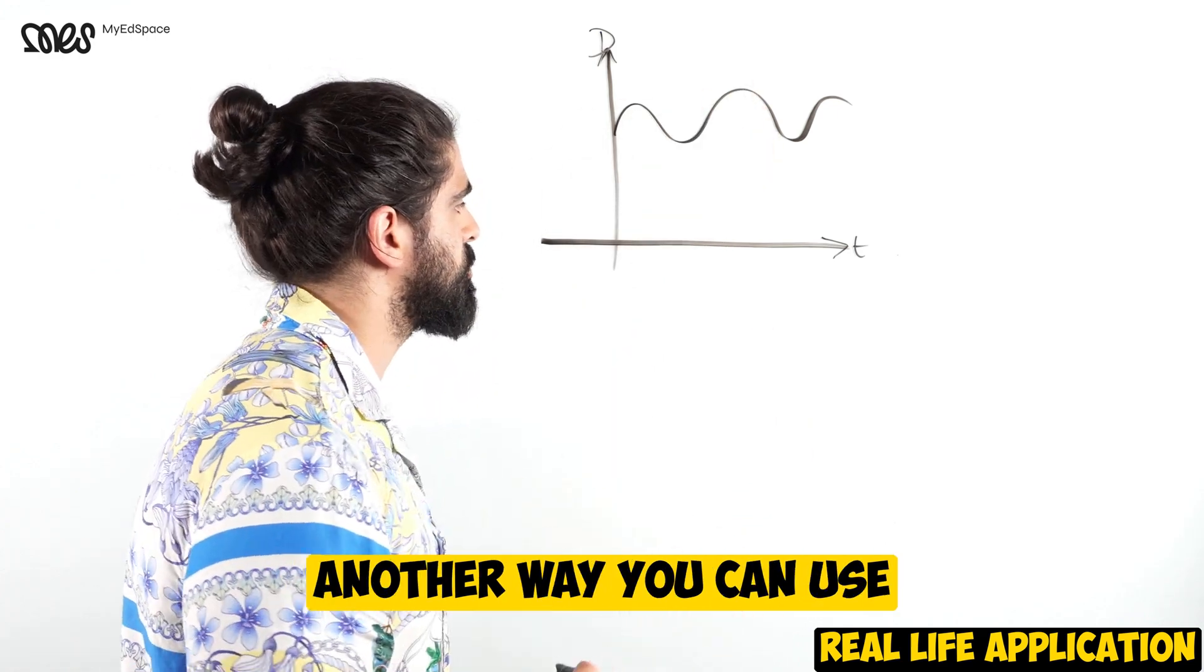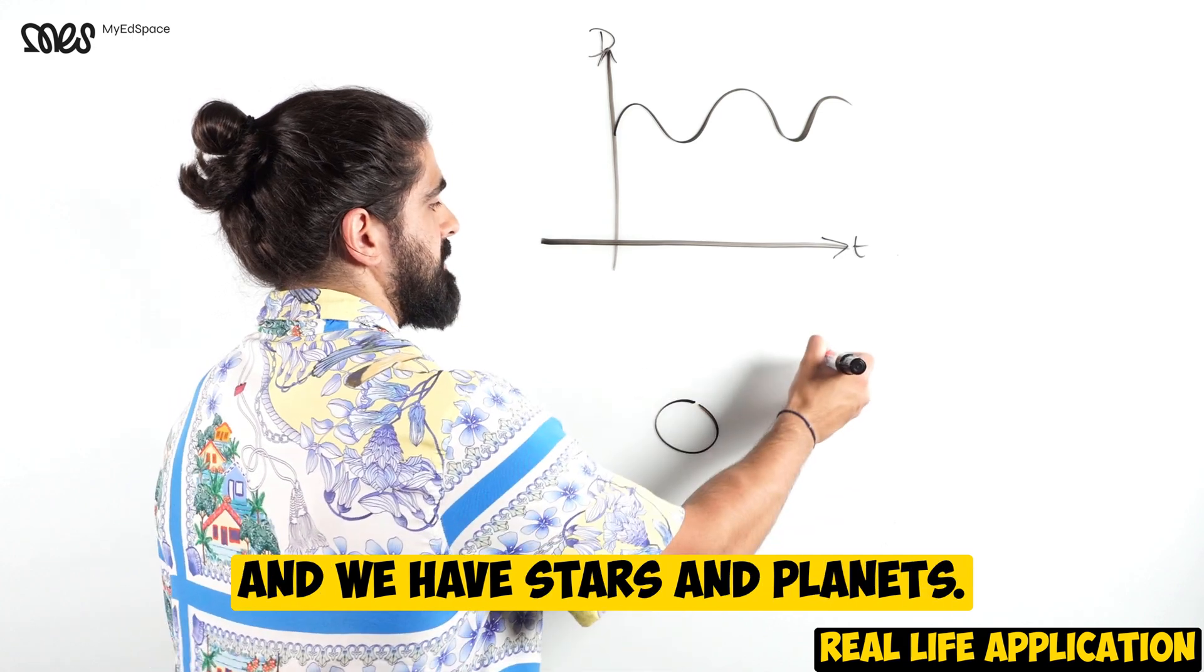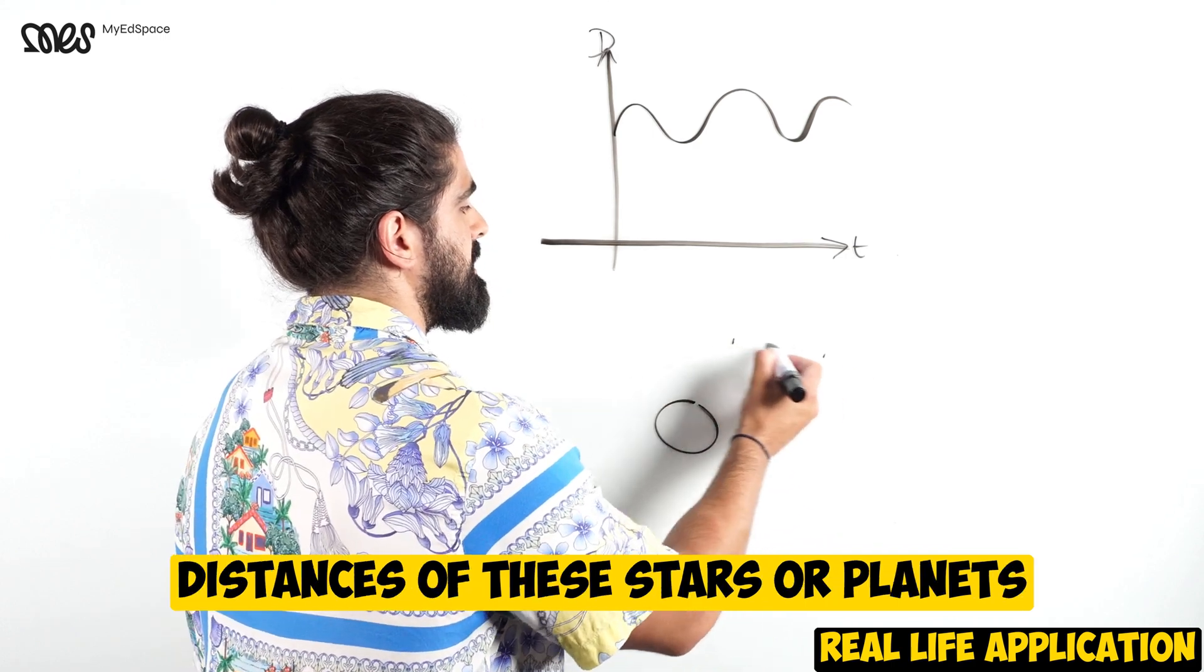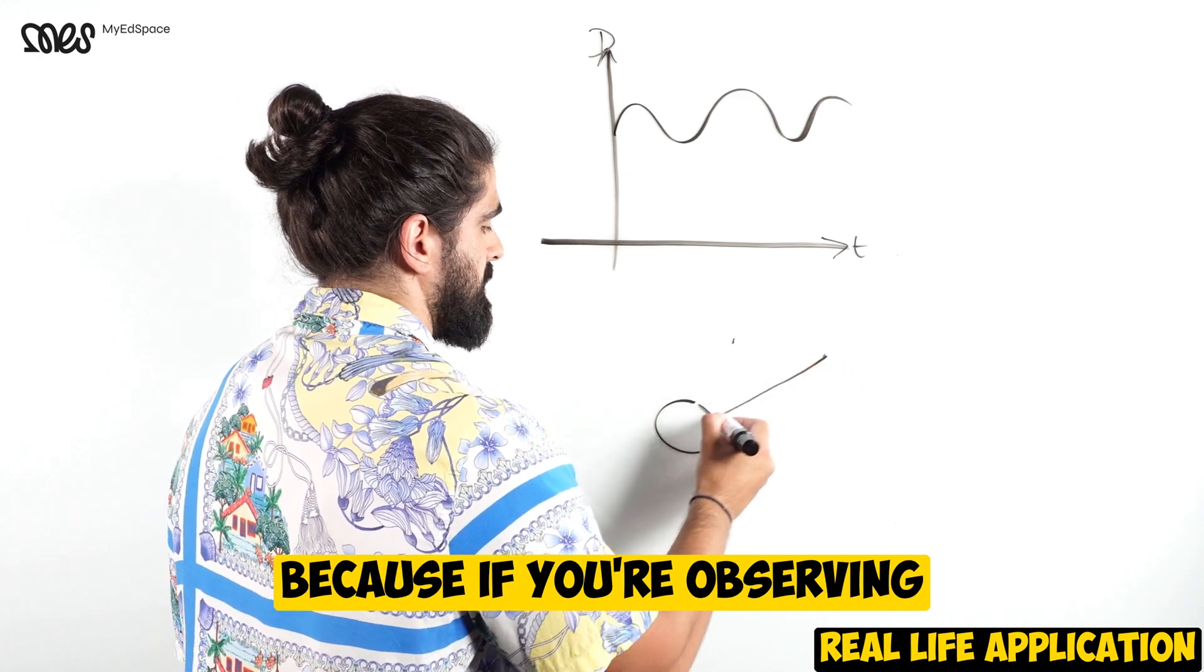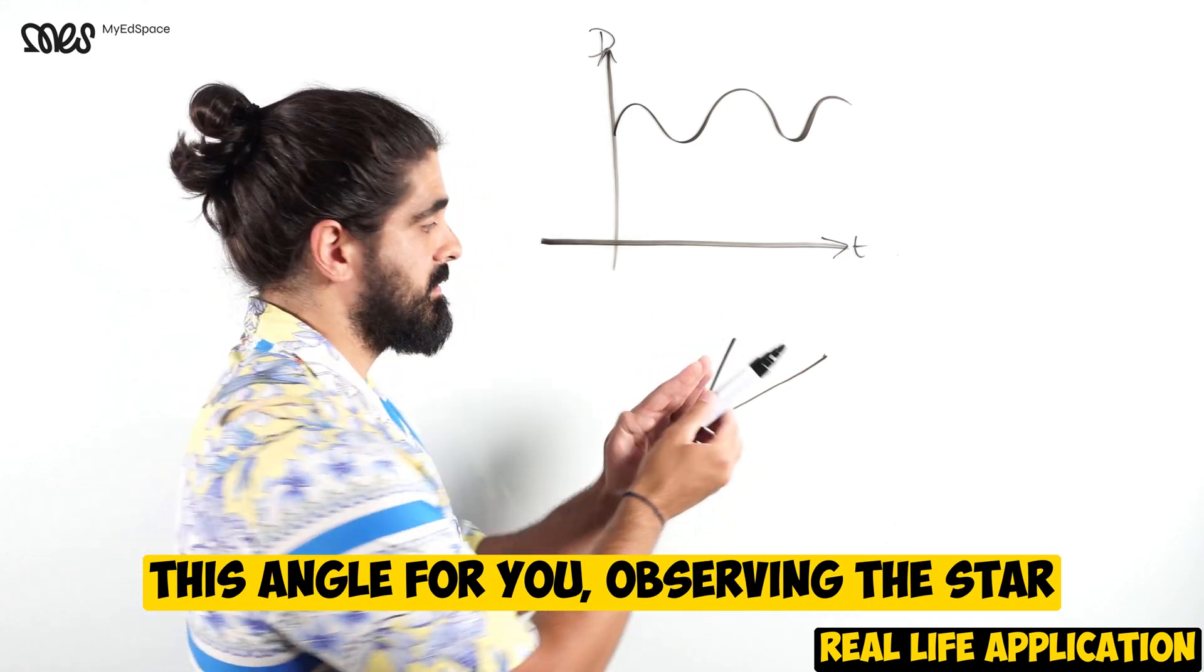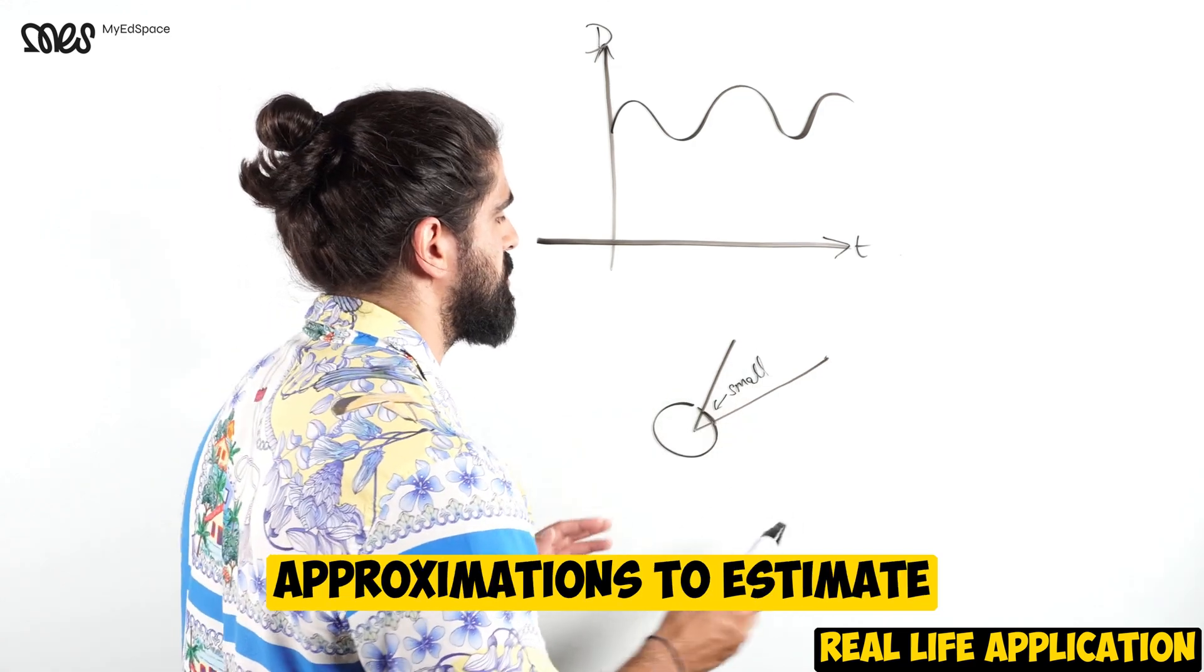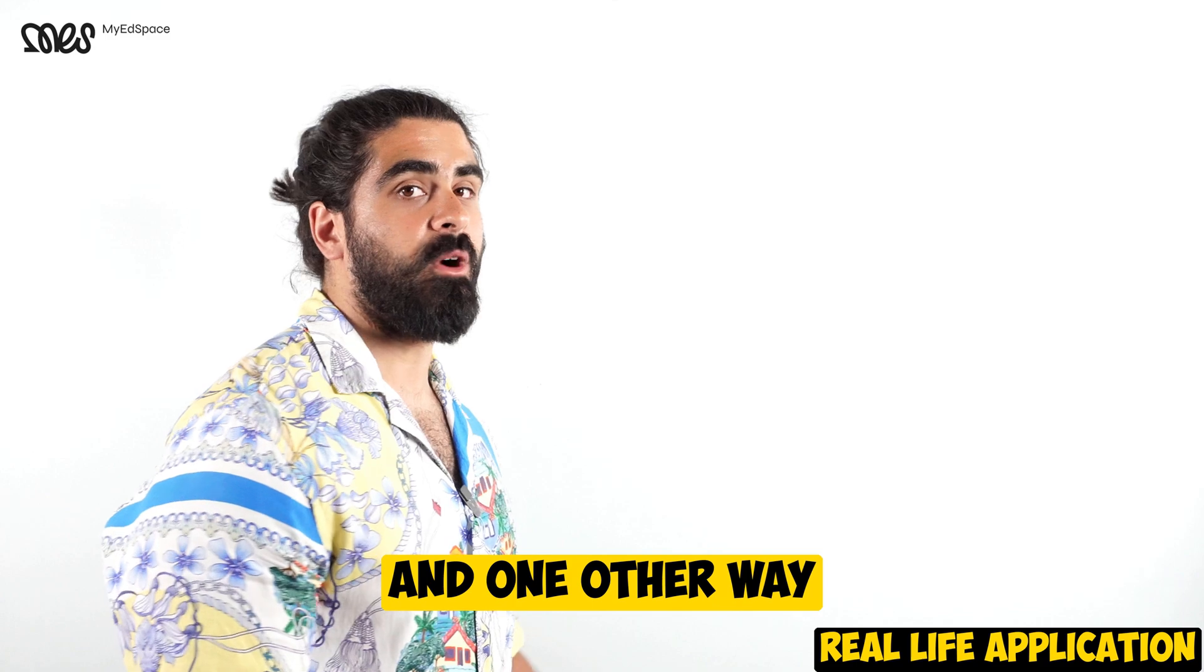Another way you can use trigonometry is in astronomy. Say we have the Earth here and we have stars and planets. We can use trigonometry and what we call small angle approximations to measure the distances of these stars or planets from each other and relative to the Earth. Because if you're observing from the Earth, this angle of you observing the star and a planet would be quite small.